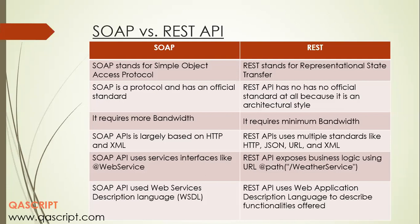Another important difference: SOAP requires more bandwidth, but REST requires minimum bandwidth. The performance of REST is pretty good when there is low bandwidth compared to SOAP APIs. SOAP APIs are largely based on HTTP and XML — it mostly uses XML as a file type to transmit information. REST API, however, uses multiple standards like HTTP, JSON, URL, and XML — there are different types of standards or file types which REST API can use.